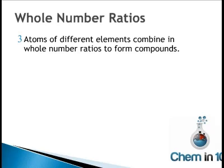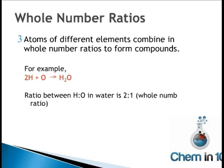What we mean by whole number ratios — that atoms of different elements combine in whole number ratios to form compounds — can be better explained with an example. Two hydrogen atoms and one oxygen atom will form together to make H2O, water. The ratio between hydrogen and oxygen in water is 2 to 1 — a whole number ratio. This is based on the fact that atoms are indivisible, so they're going to react in whole number ratios. You're not going to have one hydrogen to half an oxygen, because we don't have half atoms.